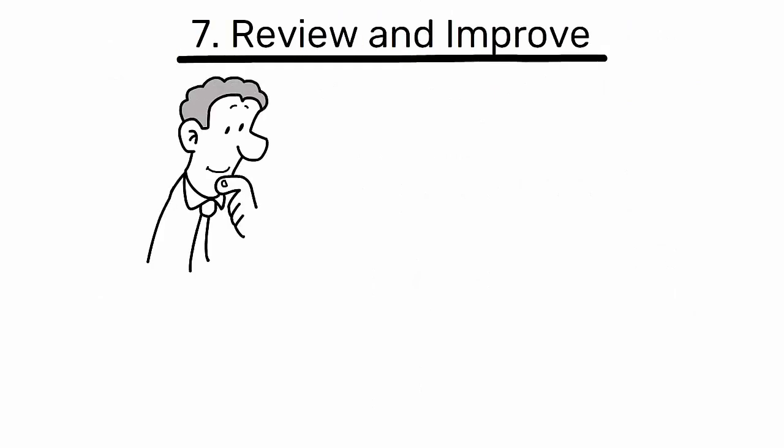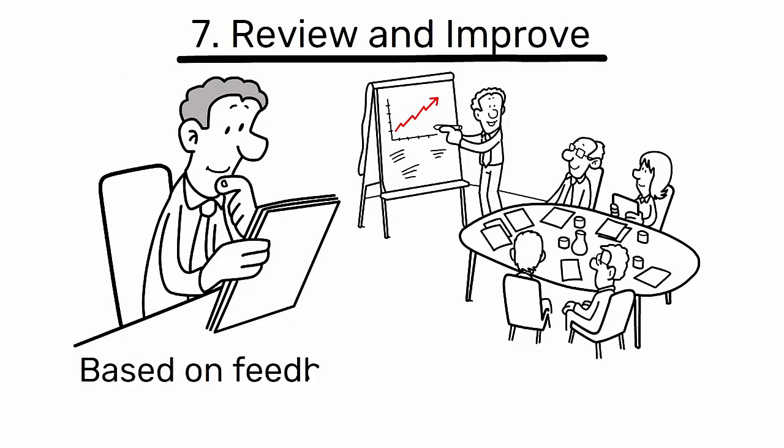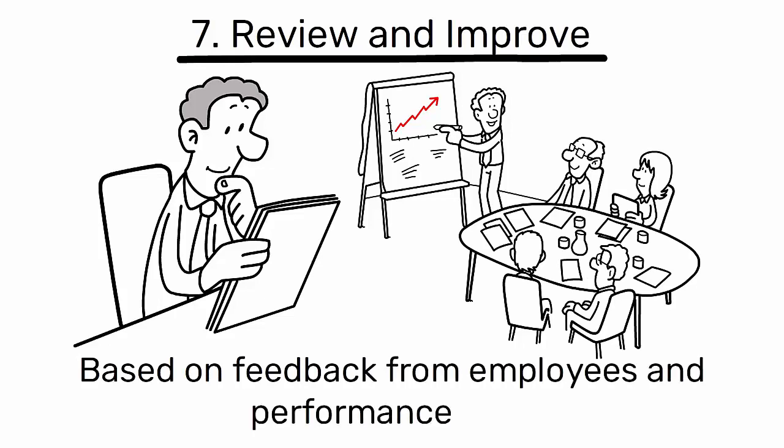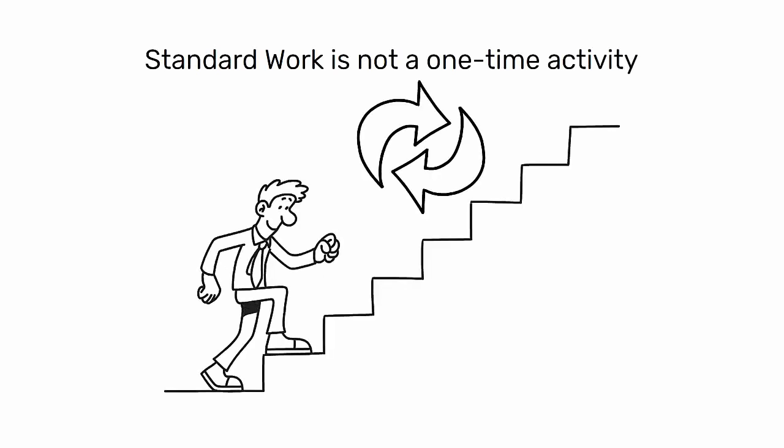7. Review and improve. Regularly review the standard work and make improvements based on feedback from employees and performance data. Remember, standard work is not a one-time activity, but a continuous cycle of improvement.